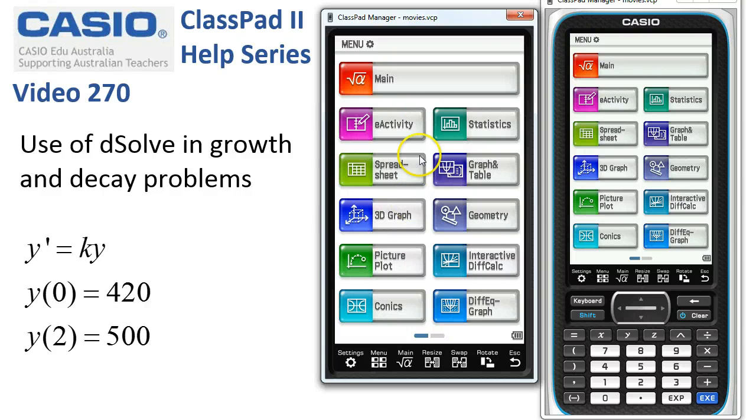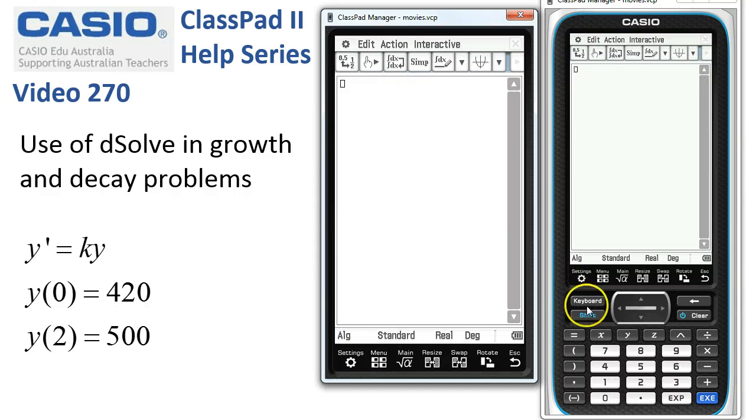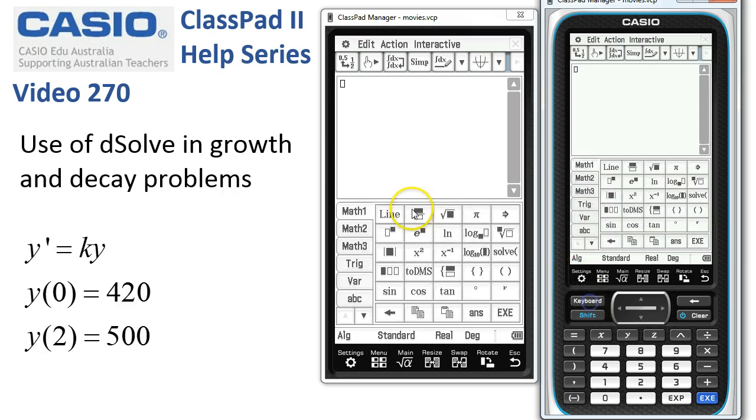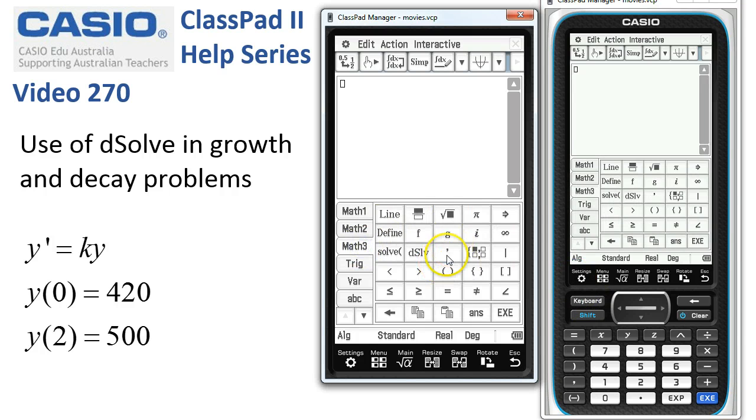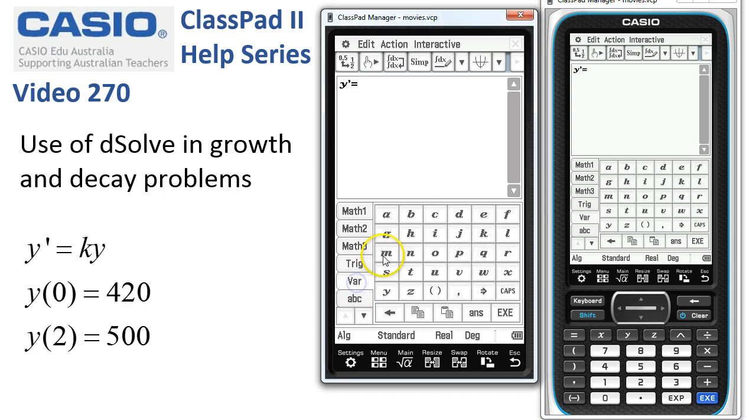Use of D solve in growth and decay problems. We'll start in main, grab the keyboard and head down to Math 3 where we've got the prime. Our differential equation y prime is equal to ky. We'll use the variables then we've got k and y ready to go and tap execute.